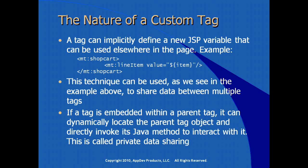If a tag is defined as embedded within a parent tag, it can dynamically locate the parent tag object and directly invoke tag methods to interact with the parent tag — this is generally called private sharing. The shop cart and line item example is public data sharing: the shop cart tag creates a variable publicly available on the page. If you're concerned about name collisions, you can scope it by directly invoking tag methods on the parent tag, keeping data privately contained within the parent tag.